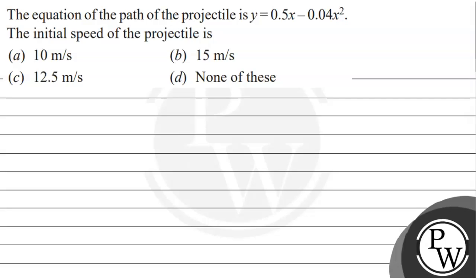Hello, let's read this question. The question says that the equation of the path of the projectile is y equals 0.5x minus 0.04x square. The initial speed of the projectile is: options are 10 meter per second, 15 meter per second, 12.5 meter per second, or none of these. We have to choose the correct option.